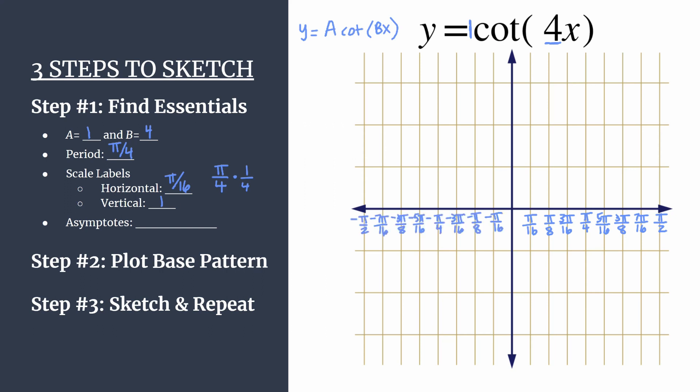Here is the axis fully labeled. And let's label that vertical axis as well. Count by one. So we have one, two, three, and negative one, negative two, and negative three.